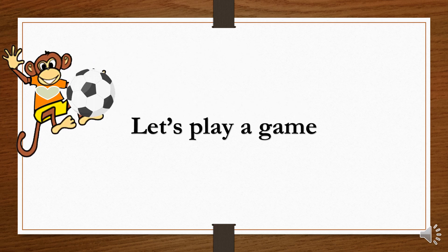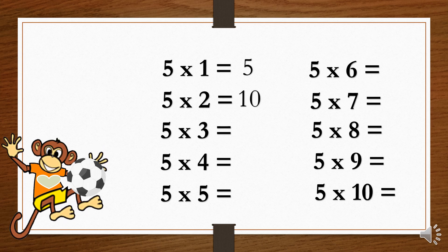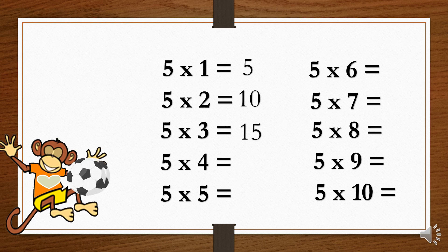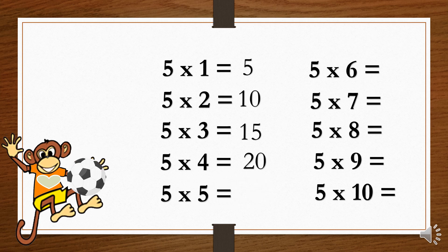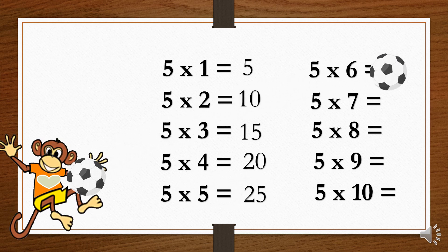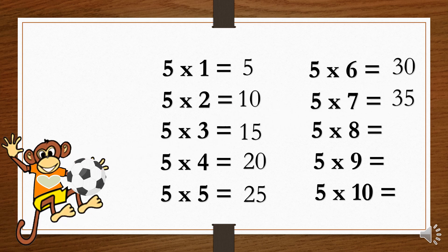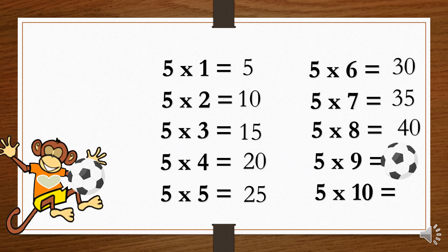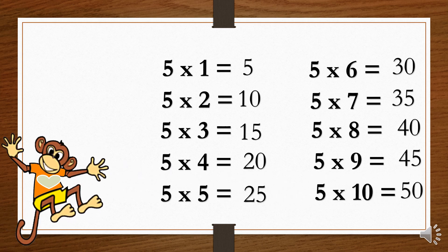Let's play a game. 5×1=5. 5×2=10. 5×3=15. 5×4=20. 5×5=25. 5×6=30. 5×7=35. 5×8=40. 5×9=45. 5×10=50.